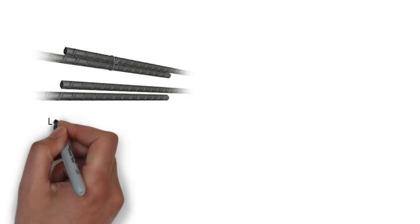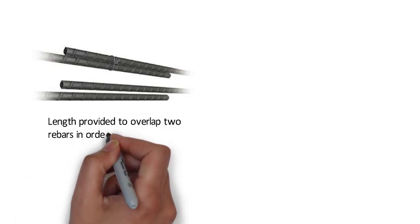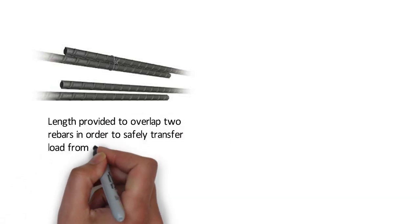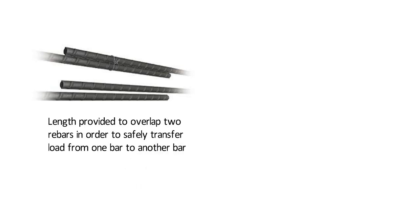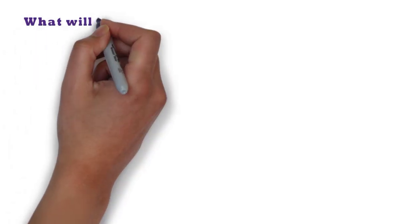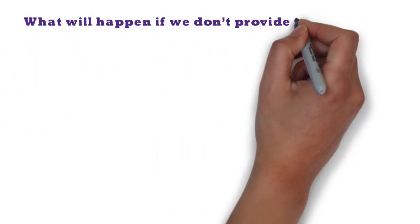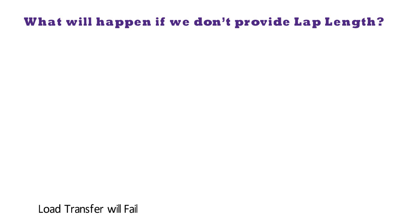Lap length is the length provided to overlap 2 rebars in order to safely transfer load from one bar to another bar. An alternative to this is to provide mechanical couplers. If we don't provide lap length, then the load transfer mechanism will fail, which will eventually lead to failure of the structure.